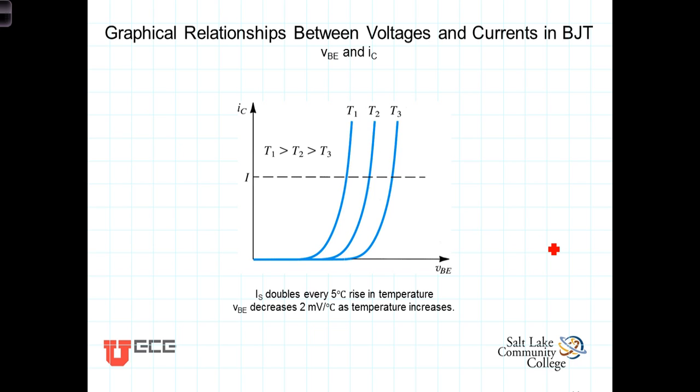The collector current is a function of the junction voltage VBE. As we've seen, all three of the terminal currents I sub C, I sub B, and I sub E are exponentially dependent on VBE, and they differ only by a scaling factor. Thus, the graph of every one of those currents with respect to VBE will display the general form of this graph here.